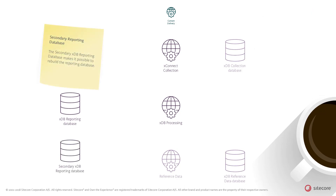After deployment of a new XCore version, or if the solution is extended with new reporting dimensions or data sets, it may need to be reprocessed. It may need to reprocess all the interactions in the XCore experience database. This process is called historical aggregation. For this purpose, you must set up an additional secondary database. When a secondary XDB Reporting database is attached, all live aggregation data is stored both in the primary and secondary reporting database.